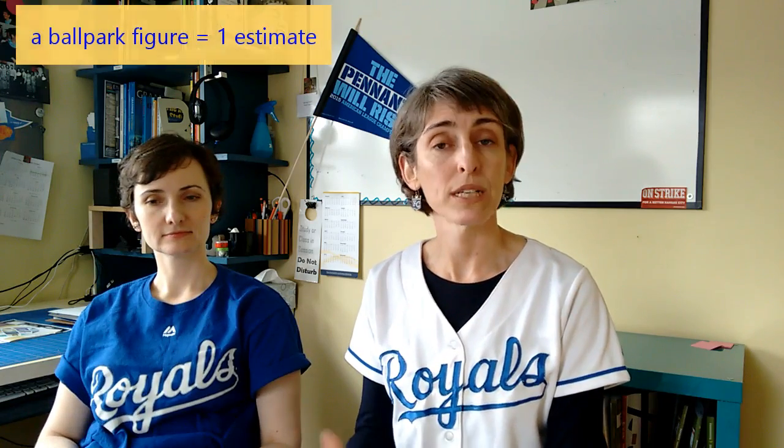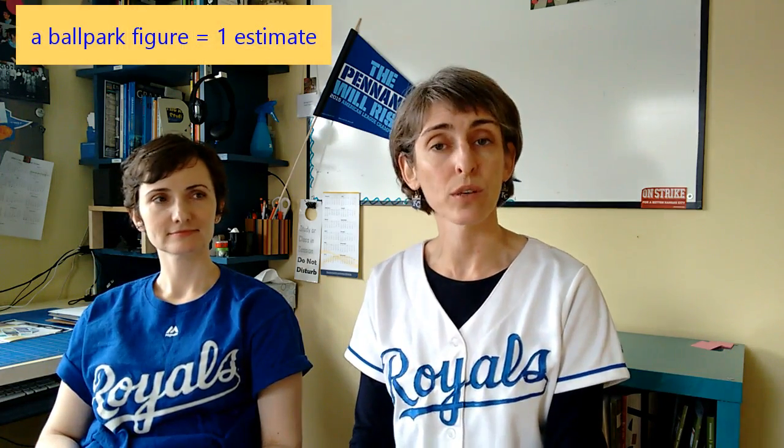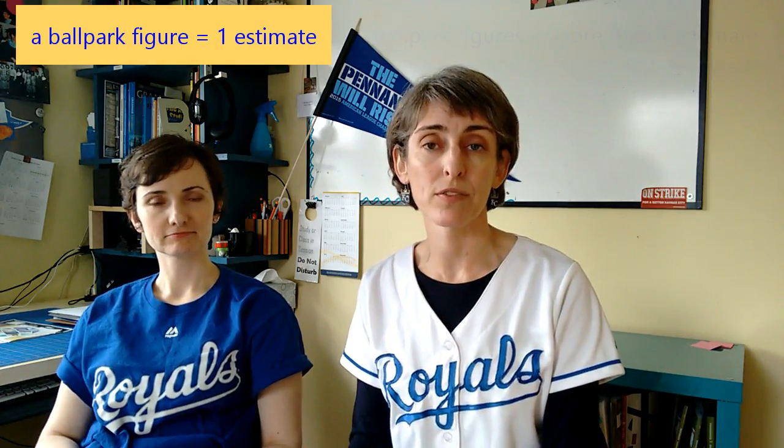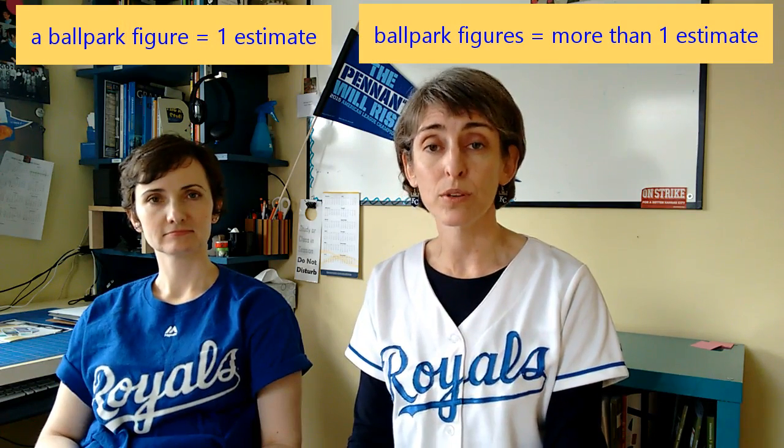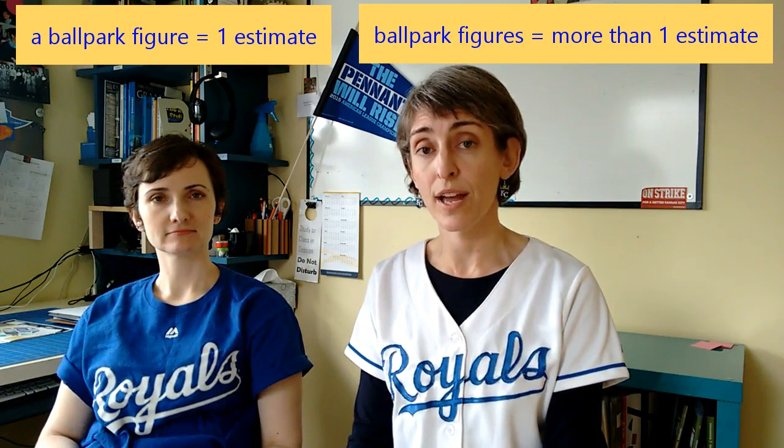Let's talk a little bit about the grammar. Ballpark figure is a noun phrase, so you just use it like a noun — it's very easy to use. It's usually referred to in singular, so there's only one: you say 'a ballpark figure.' You can use it in plural if you're talking about different estimates about different things. Just use it like you would a noun and you'll be ready to go.